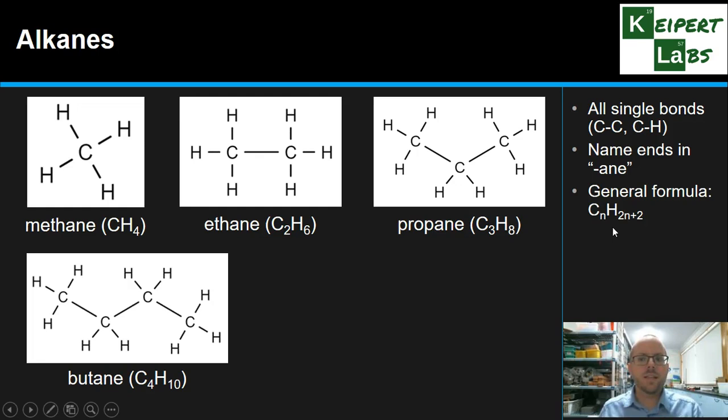The general molecular formula is CnH2n plus 2. That is, the number of hydrogens is double the number of carbons plus another two. You can see that each of these formulas fits the pattern. But I'm going to show you another compound that shows that there is some complexity here.